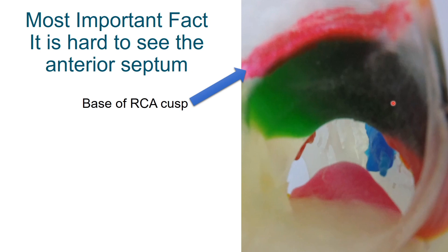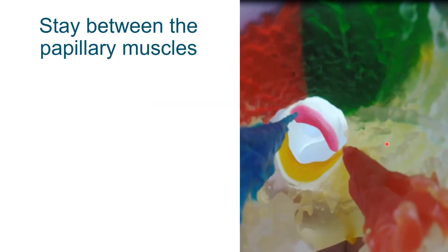It's important to really take a moment when starting a septomyectomy to find the A2 segment, find the posterior medial papillary muscle, identify the anterolateral papillary muscle — which can be hard to see — and focus on staying in between those two papillary muscles. You can stay between the papillary muscles going all the way down to the apex, and avoid getting on the far side of the posterior medial papillary muscle because it's thin and a VSD will occur there. If you get on this side, this is the LAD right here — you'll start to enter the lateral wall. Staying above this is absolutely critical.